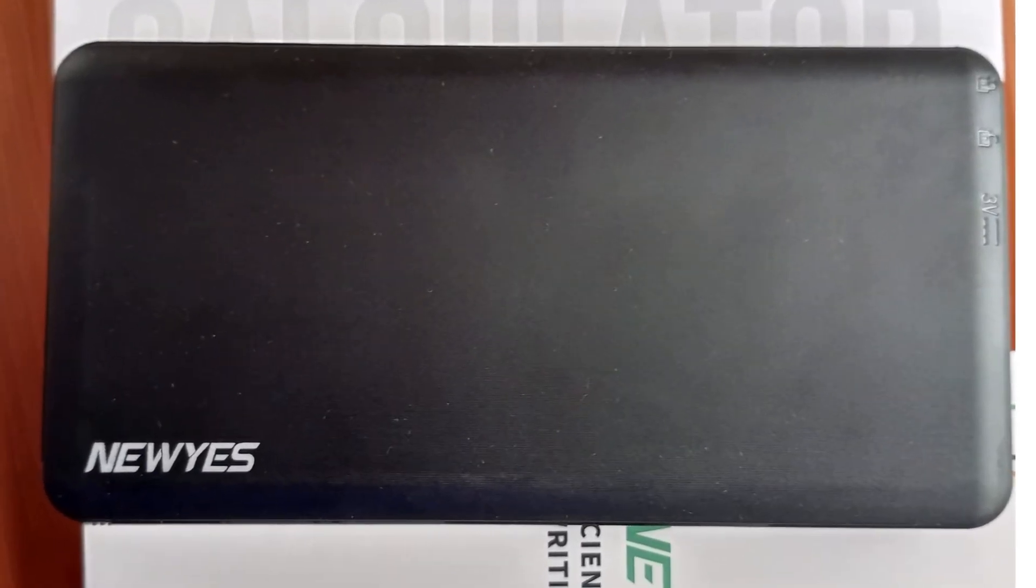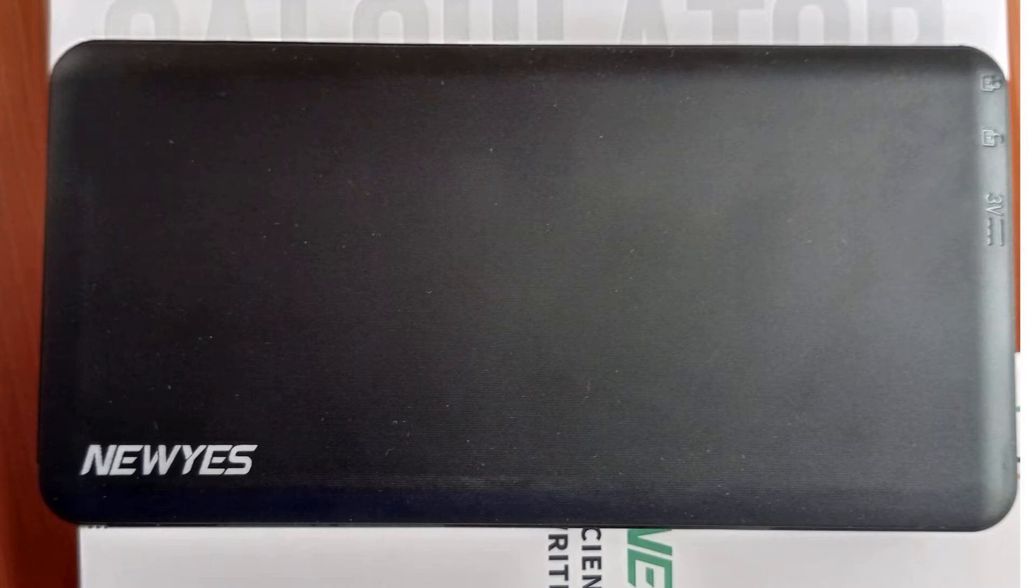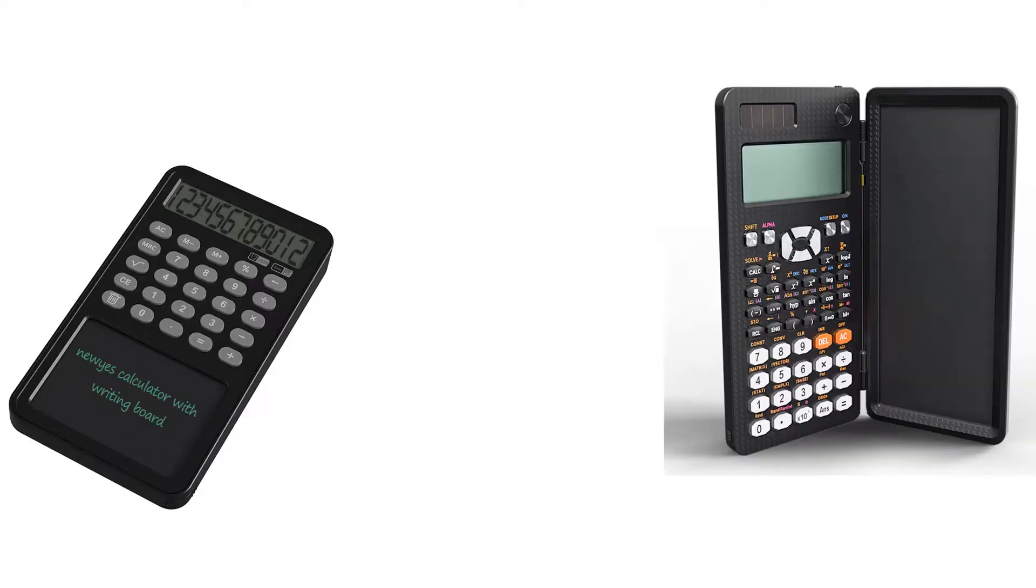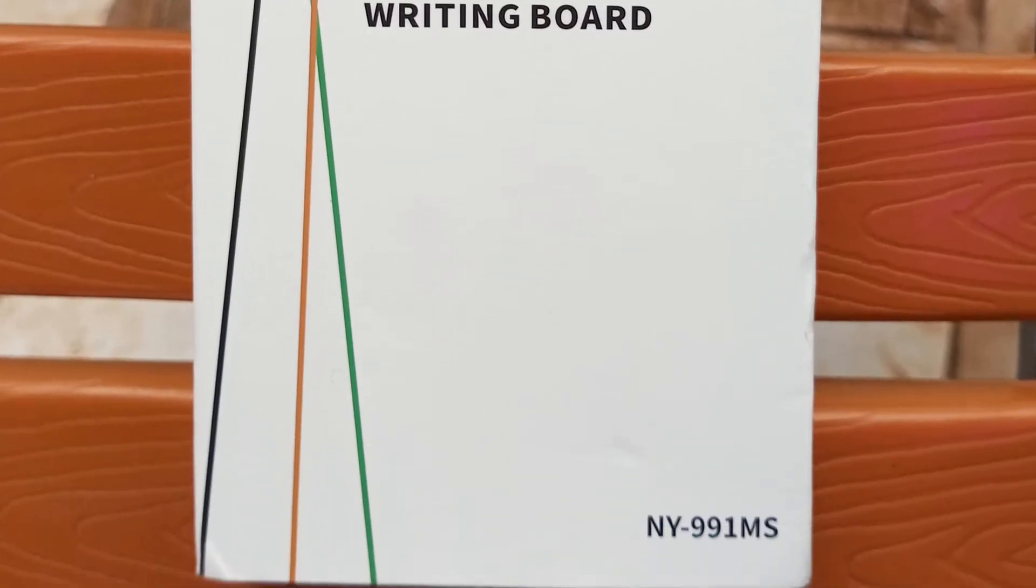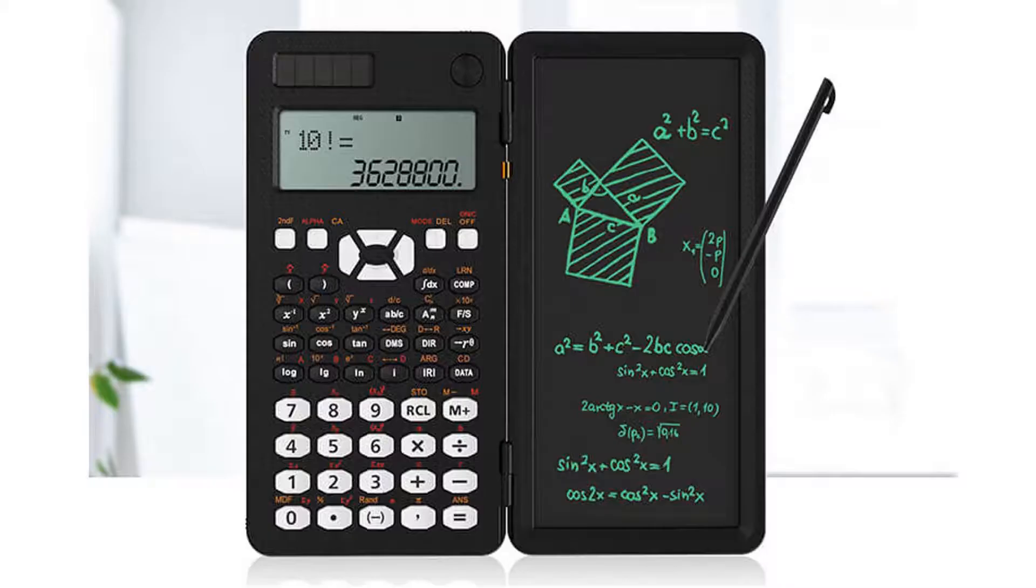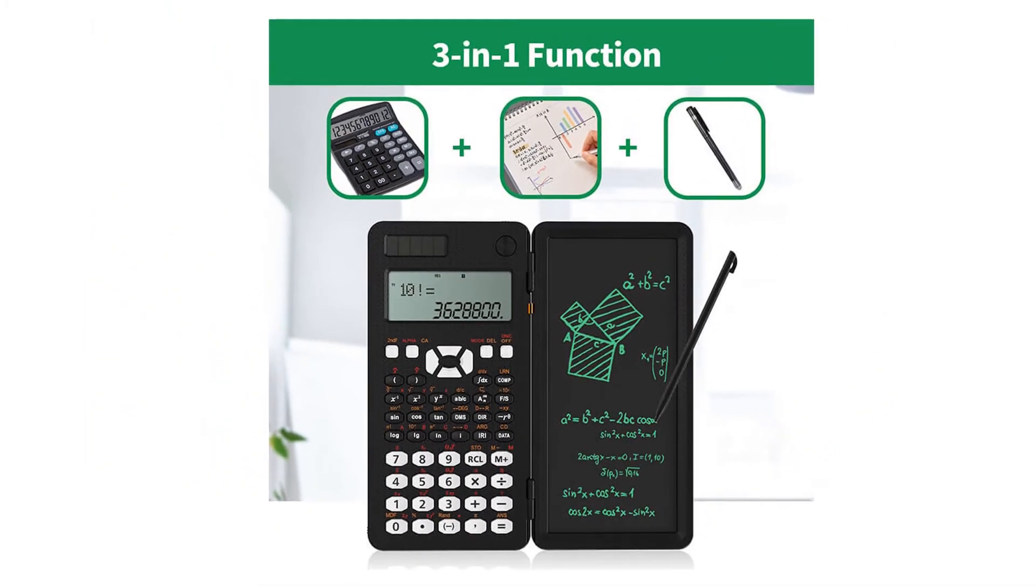This product you're seeing is New Year's Scientific Calculator Writing Board. Honestly speaking, New Year's company has different types of calculators but this is NY991MS. This is how the calculator looks like. It is normally called three-in-one because it is made up of the calculator itself, writing board, and then it comes with a very beautiful writing pen.